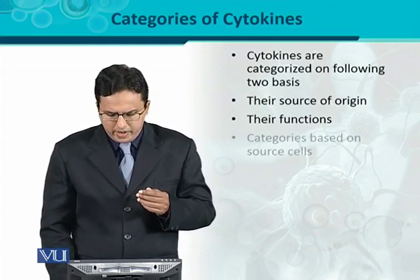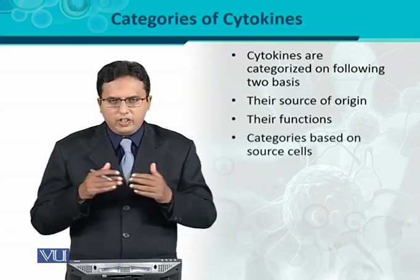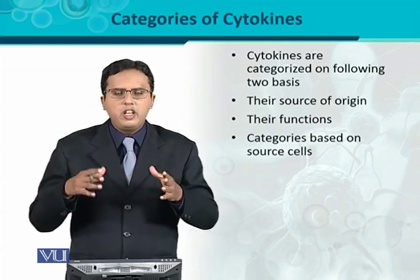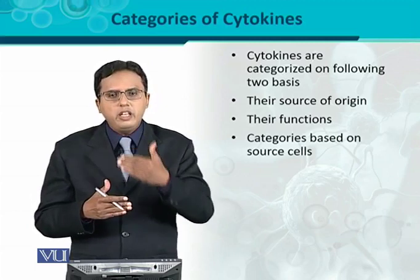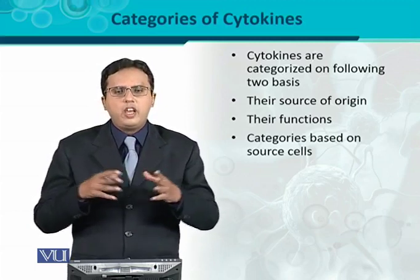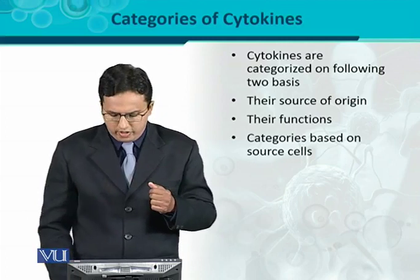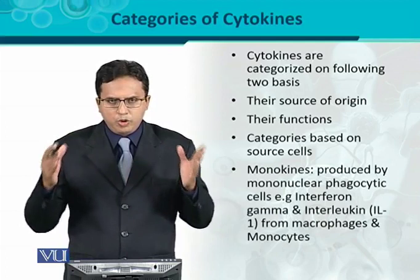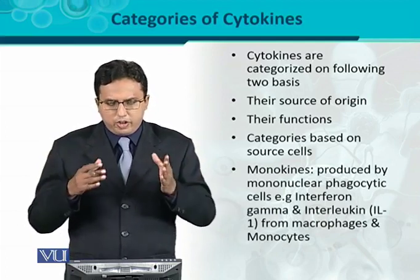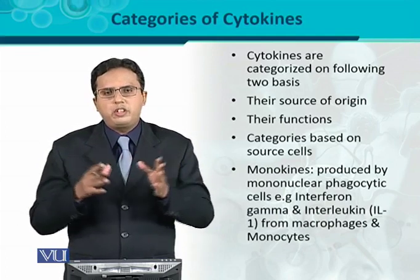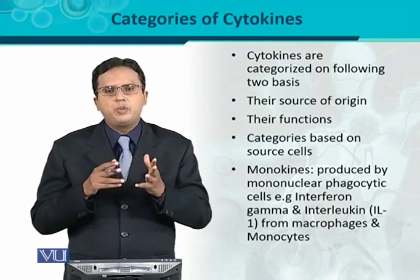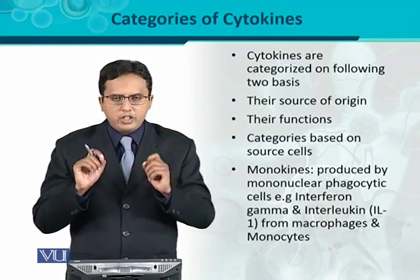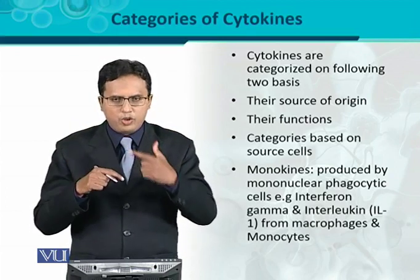The first category of cytokines is based on the source or origin of the cell. For example, monokines — these are produced from mononuclear phagocytic cells, such as macrophages or monocytes, because their nucleus is a single nucleus. 'Mono' means one, so that's why they are called monokines.